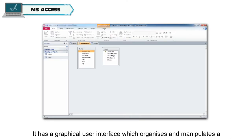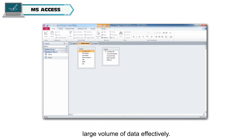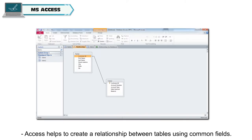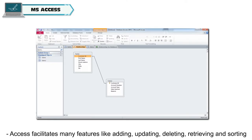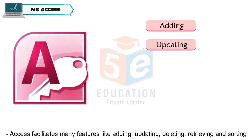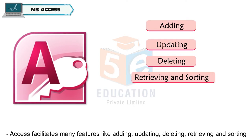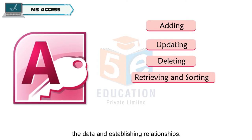MS Access has a graphical user interface which organizes and manipulates a large volume of data effectively. Access helps to create a relationship between tables using common fields. Access facilitates many features like adding, updating, deleting, retrieving and sorting the data and establishing relationships.